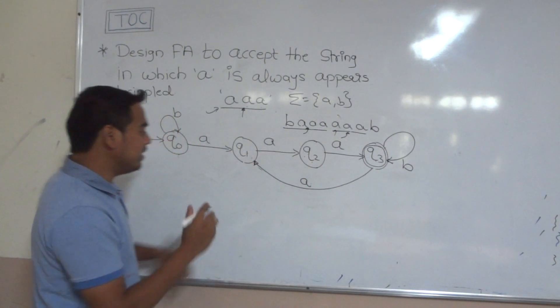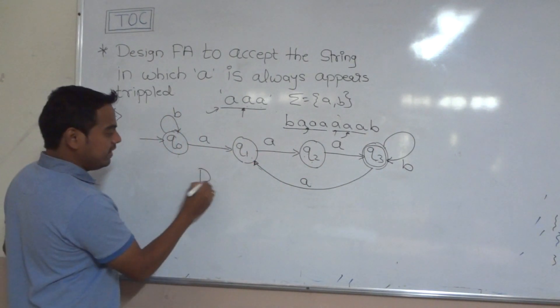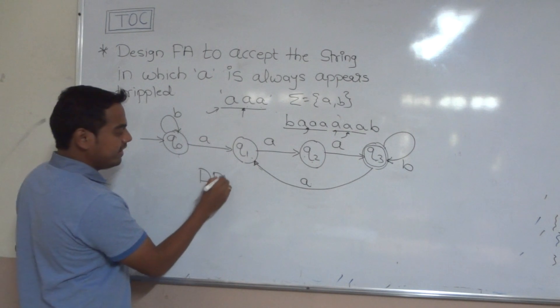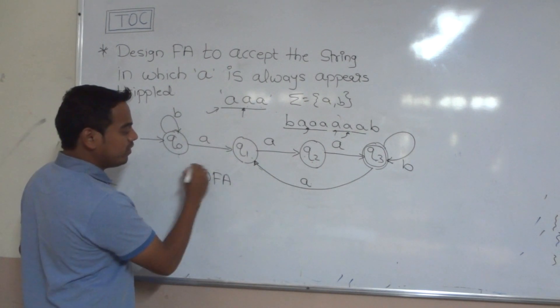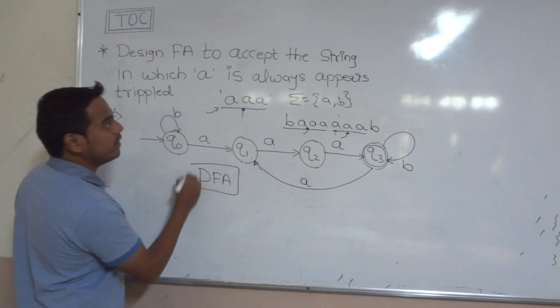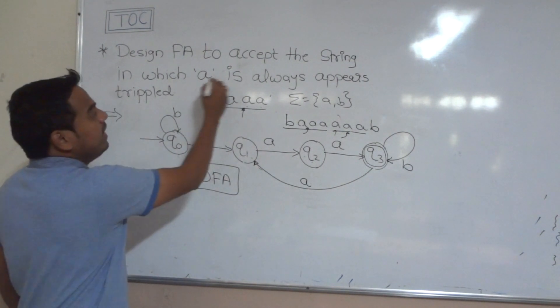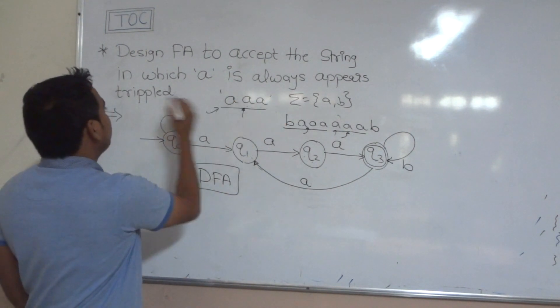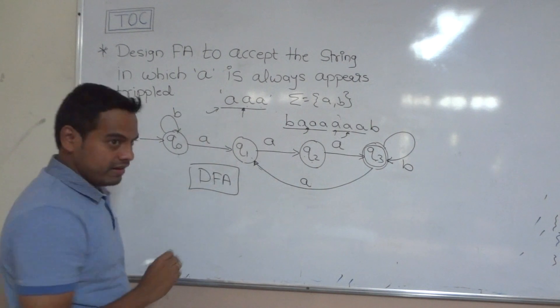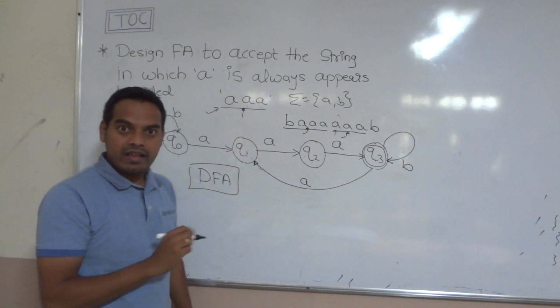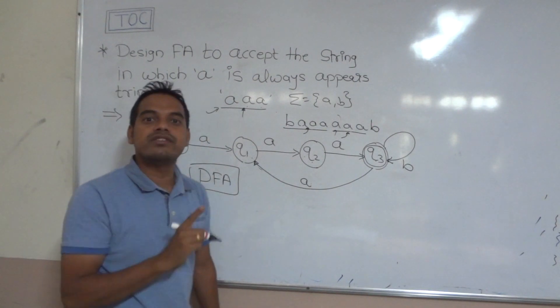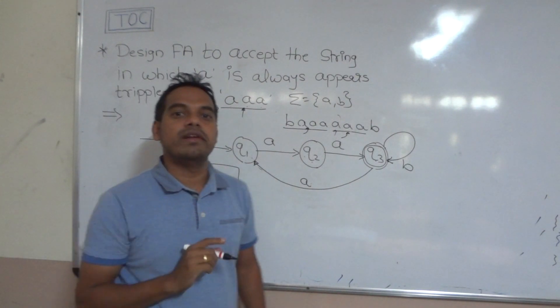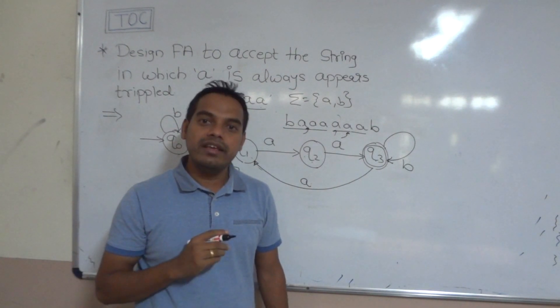This is the final deterministic finite automata for the problem where A always appears tripled. I hope you understood this problem. Thank you.